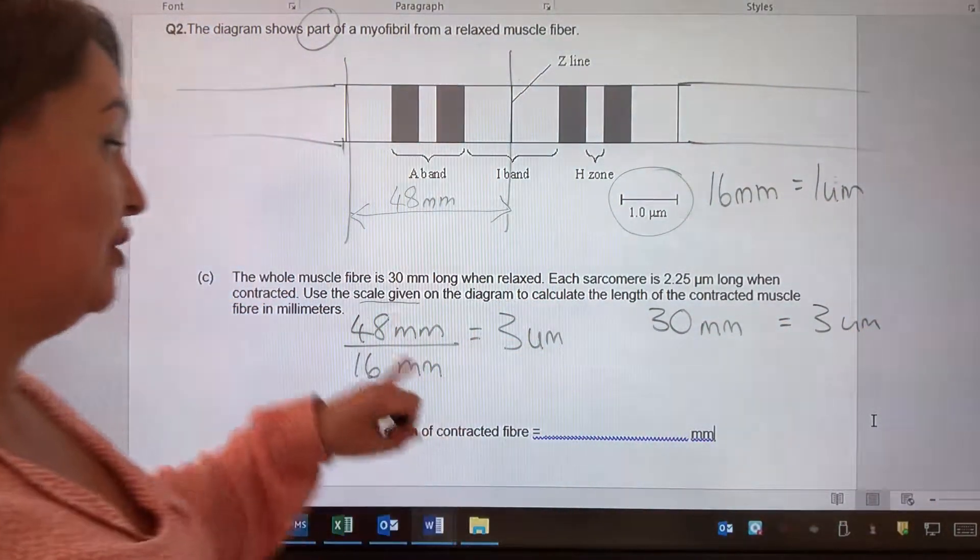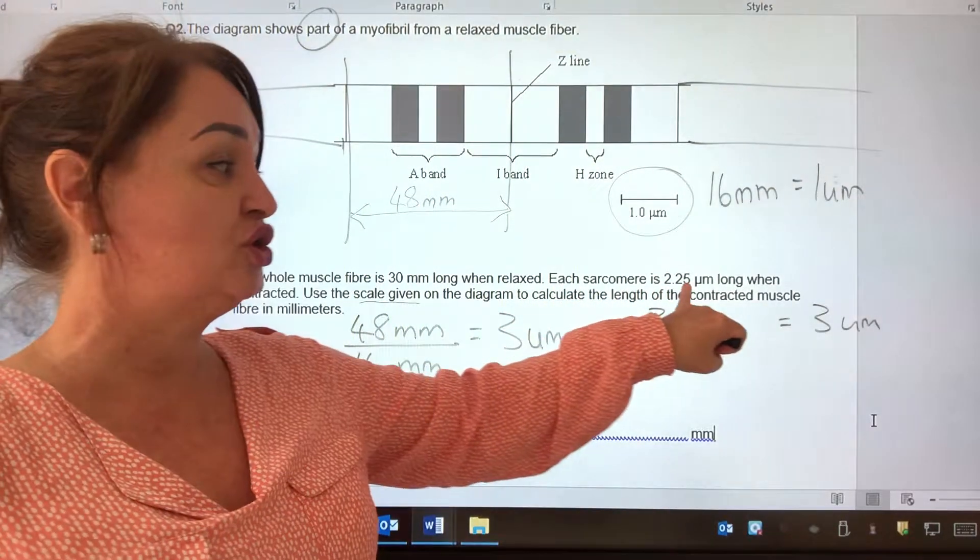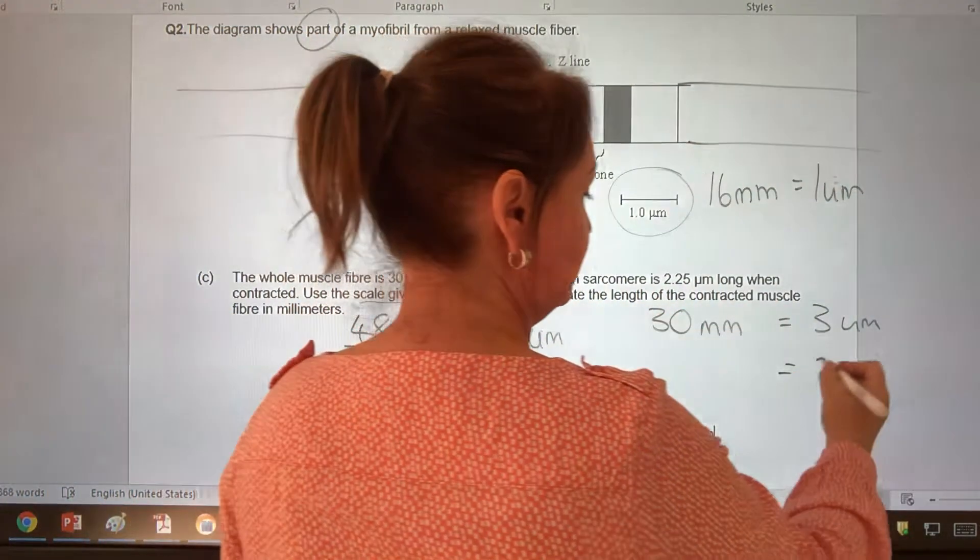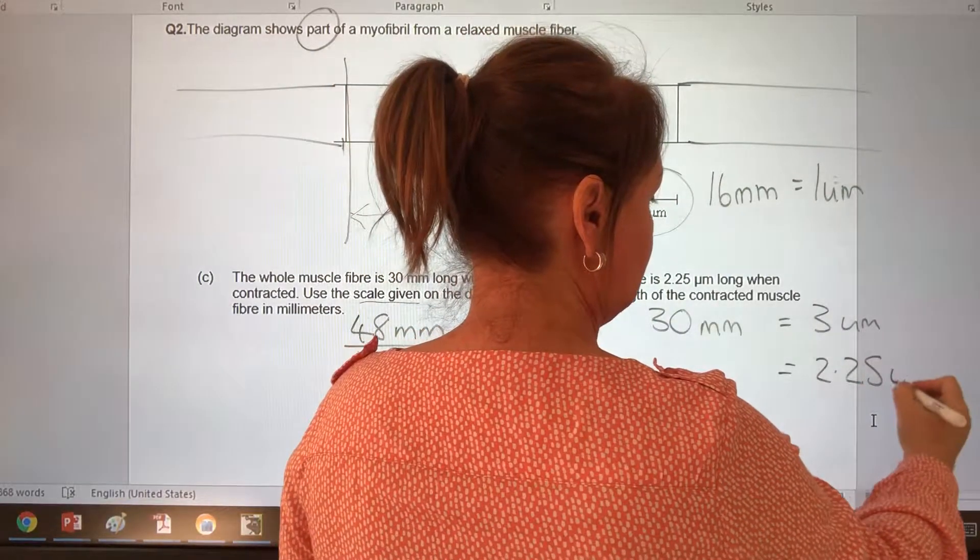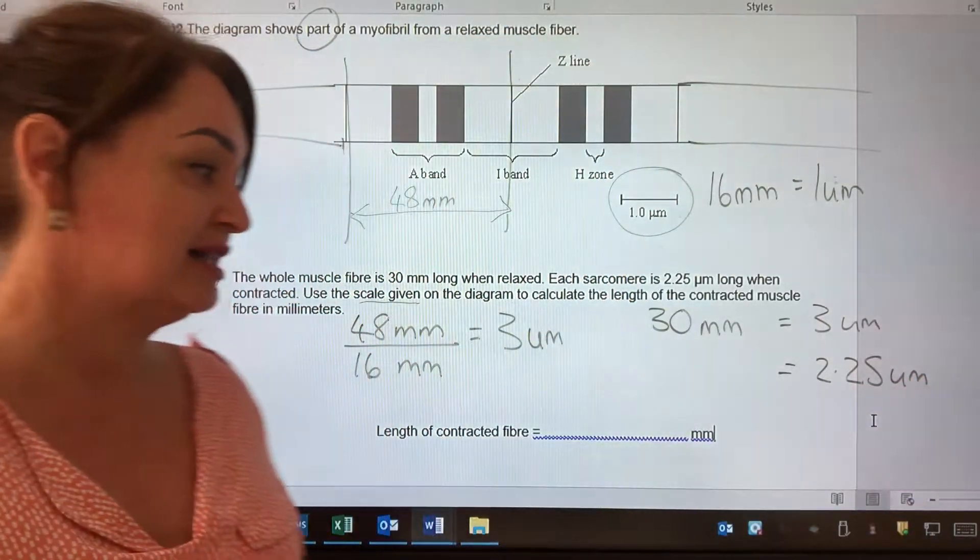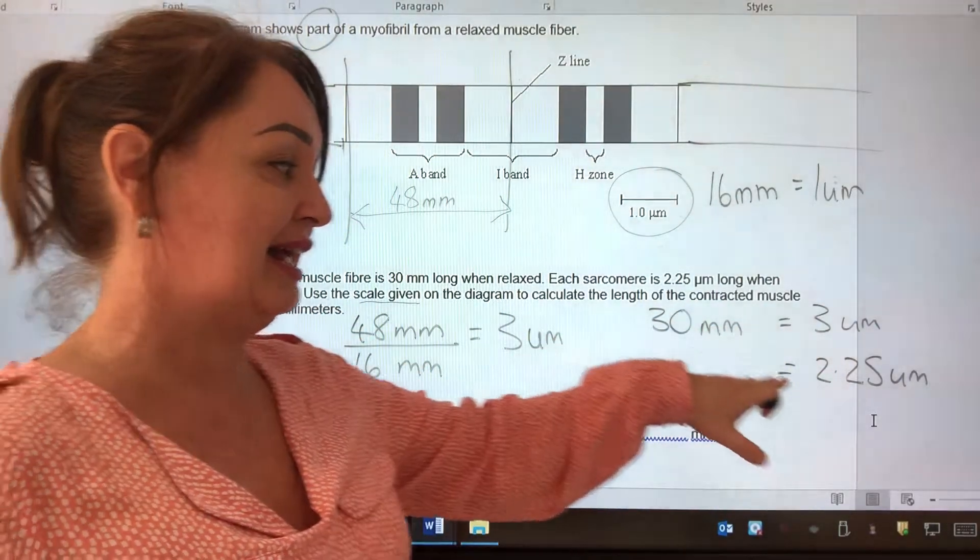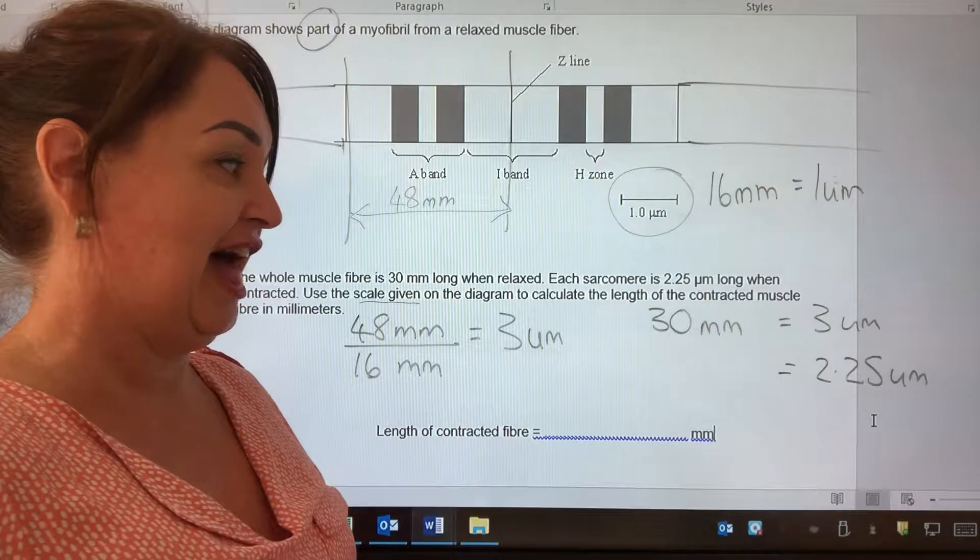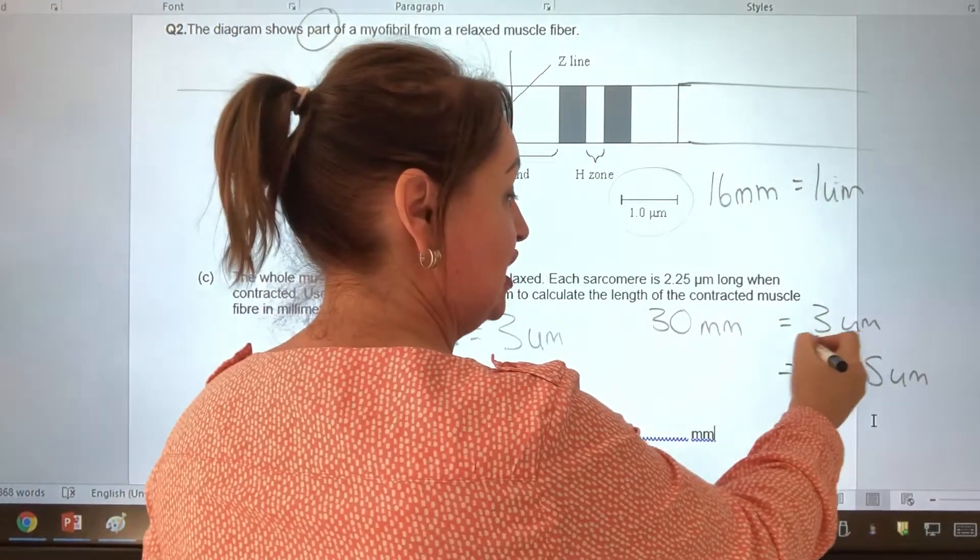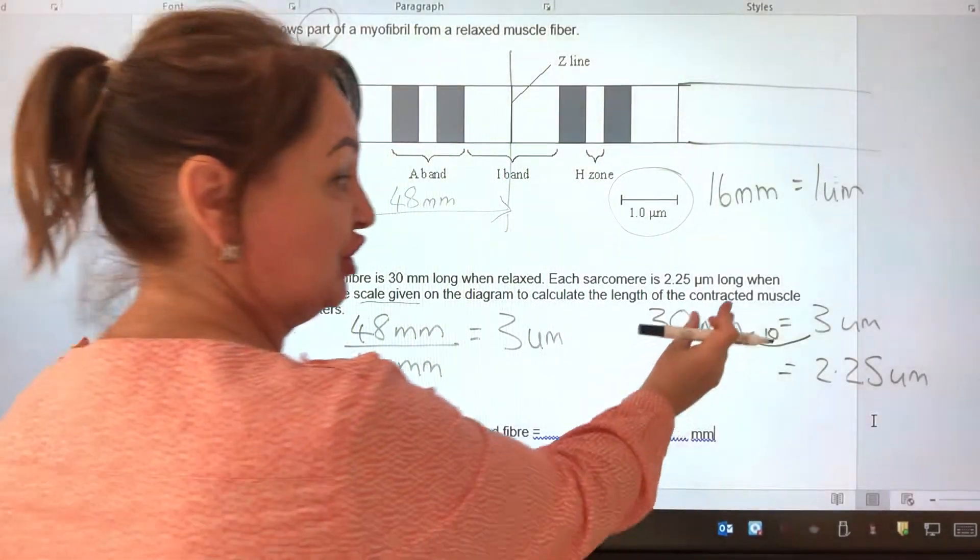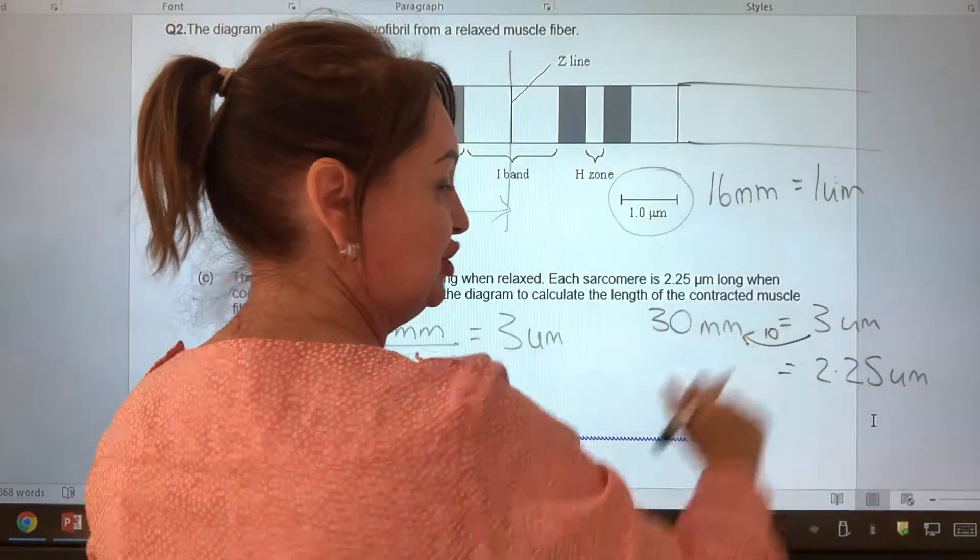So now if I look, it tells me each sarcomere is 2.25 micrometers long when the muscle is contracted. So it's going to be the same ratio there. Here, there's a factor of 10. If we're just looking at the numbers, ignoring the units.